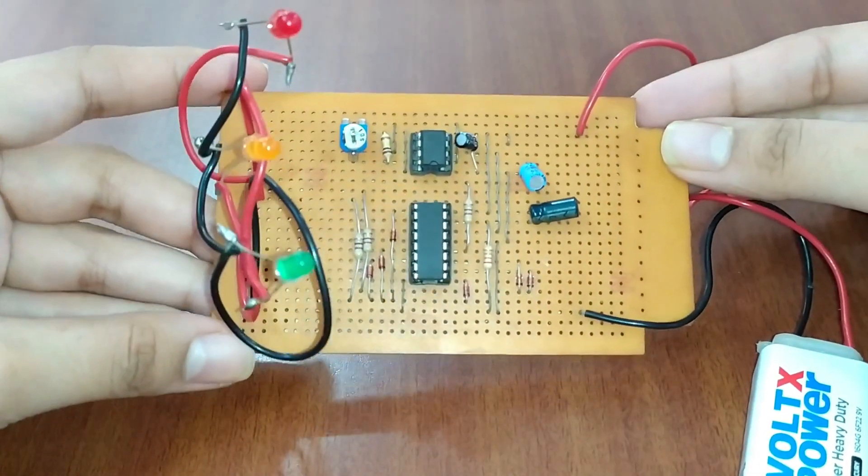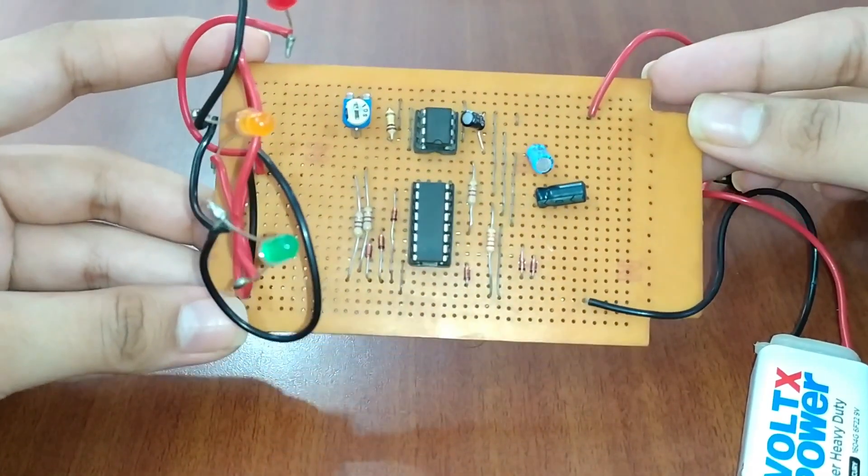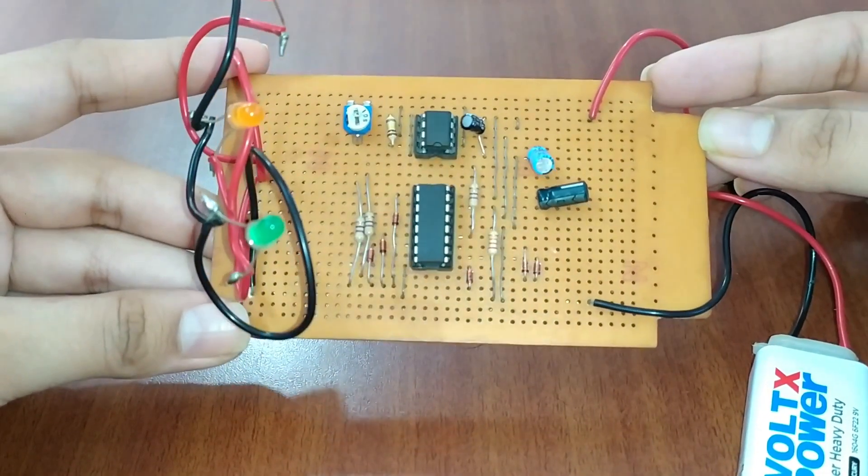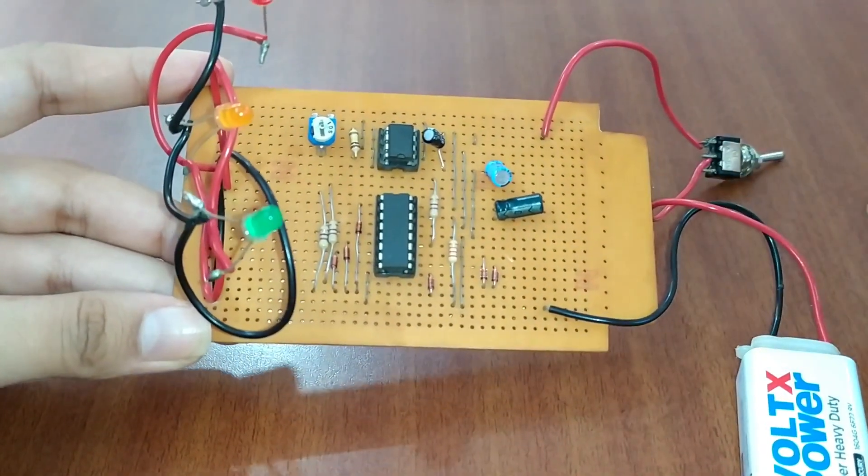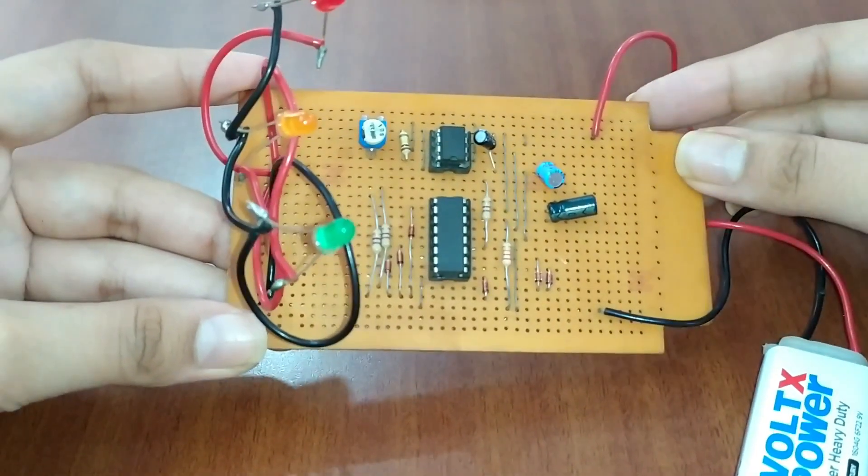I have made this using IC555 timer and IC4017 counter. Here with the help of a preset we can adjust the counter of red, green, and yellow LEDs.